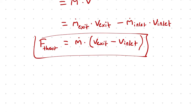Those velocities in the thrust equation are relative to the engine — the air velocity at the exhaust relative to the engine, and the incoming air velocity relative to the engine. So, for example, if we are analyzing an engine moving at 200 miles per hour through stationary air, then the velocity of the incoming air relative to the engine is 200 miles per hour, even though the air is actually stationary.